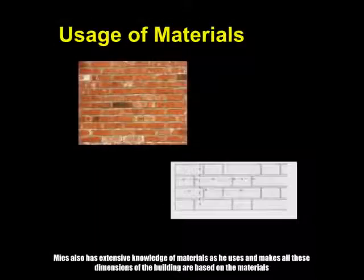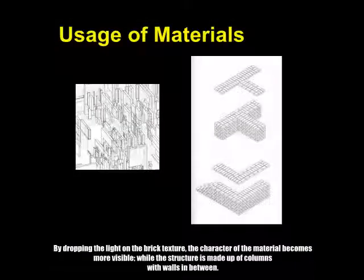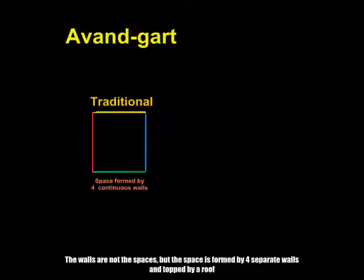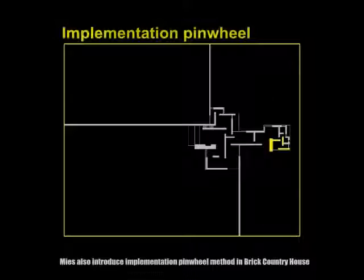Mies also has extensive knowledge of materials, and all dimensions of the building are based on the materials. By dropping light on the brick texture, the character of the material becomes more visible, while the structure is made up of columns with walls in between. The walls are not the spaces, but the space is formed by four separate walls and topped by a roof. Mies also introduced the implementation of the pinwheel method in this brick country house.